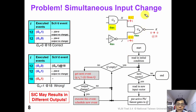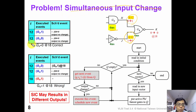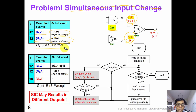But this algorithm has a problem. Suppose that we change gate G2 delay to 6 nanoseconds. In this way we will have both H and J changing at the same time T equals to 12. This is what we call a simultaneous input change. Suppose we execute the event G2 first. At this time, because J is 1 and H is also 1, output K does not change. So we don't need to schedule any new event.